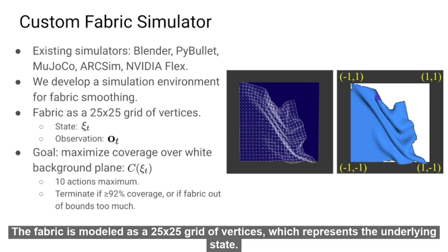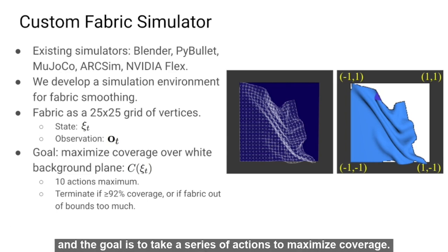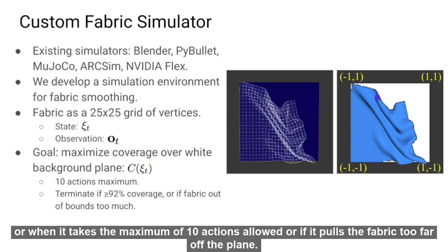The fabric is modeled as a 25 by 25 grid of vertices which represents the underlying state. We render top-down images to get observations. The fabric lies on top of a white background plane and the goal is to take a series of actions to maximize coverage. The episode ends when an agent triggers the coverage threshold, when it takes the maximum of 10 actions allowed, or if it pulls the fabric too far off the plane.